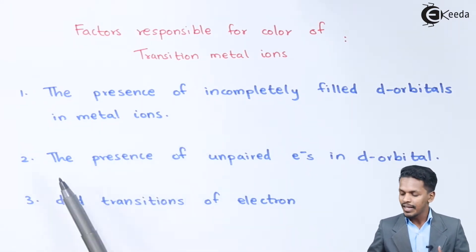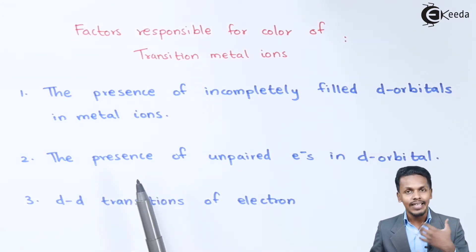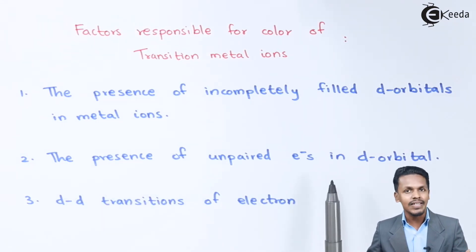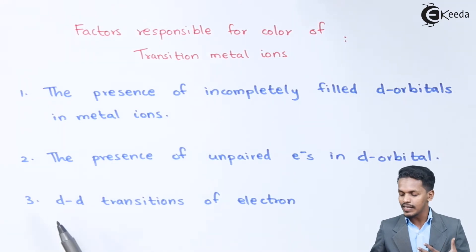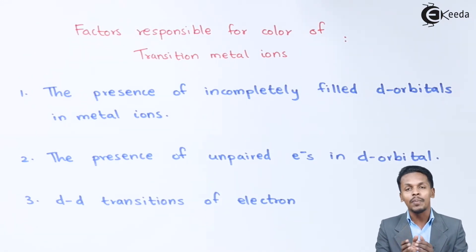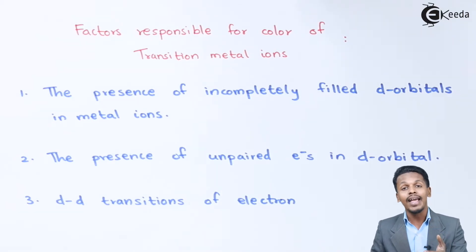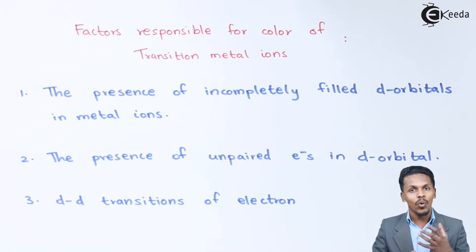The presence of unpaired electrons in the d orbital is also responsible for the d-d transition. The d-d transition occurs when the degenerate orbitals are split into two different energy levels. Because of the excitation of electrons from the lower energy level to the higher energy level, and the return of the electron back to the lower energy level, transition metal compounds are colored in nature.